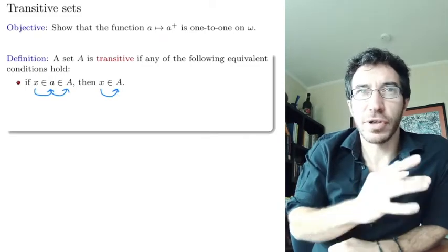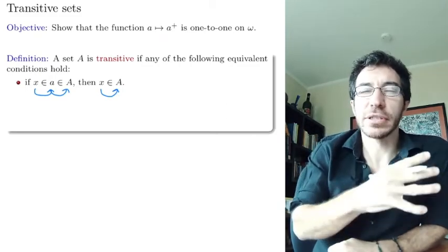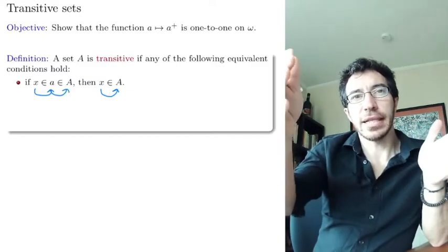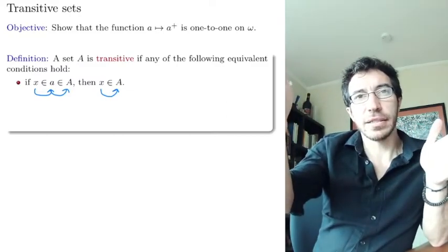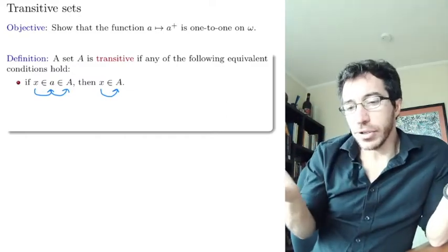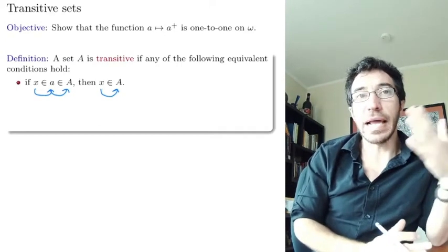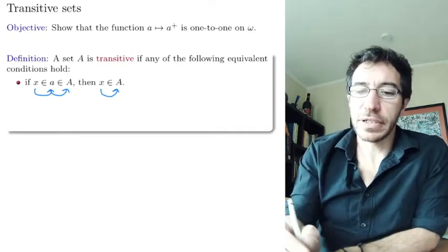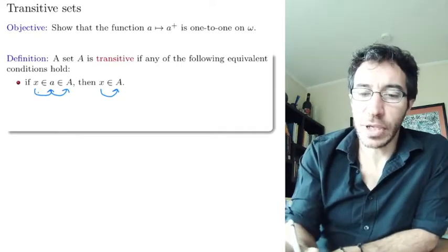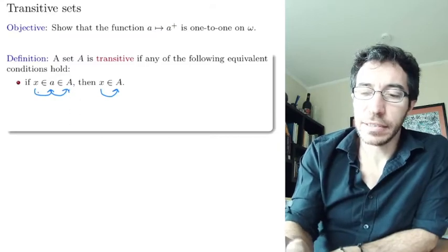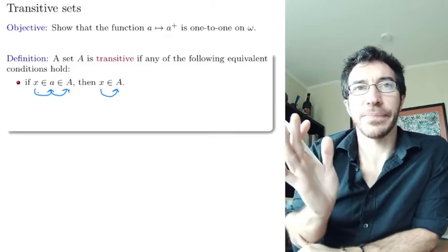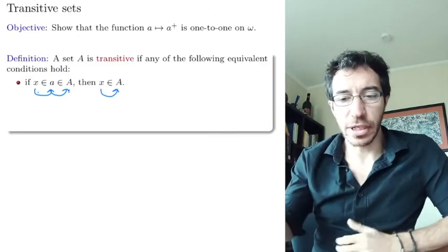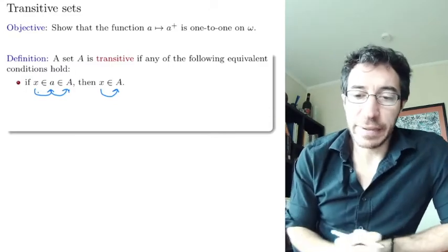You may remember what transitive means for linear or partial orderings: a < b and b < c implies a < c. That's not necessarily true for the membership relation — usually in most cases it is not true, unless you have a transitive set. In the case of a transitive set, if x belongs to a belongs to capital A, then x belongs to capital A directly.